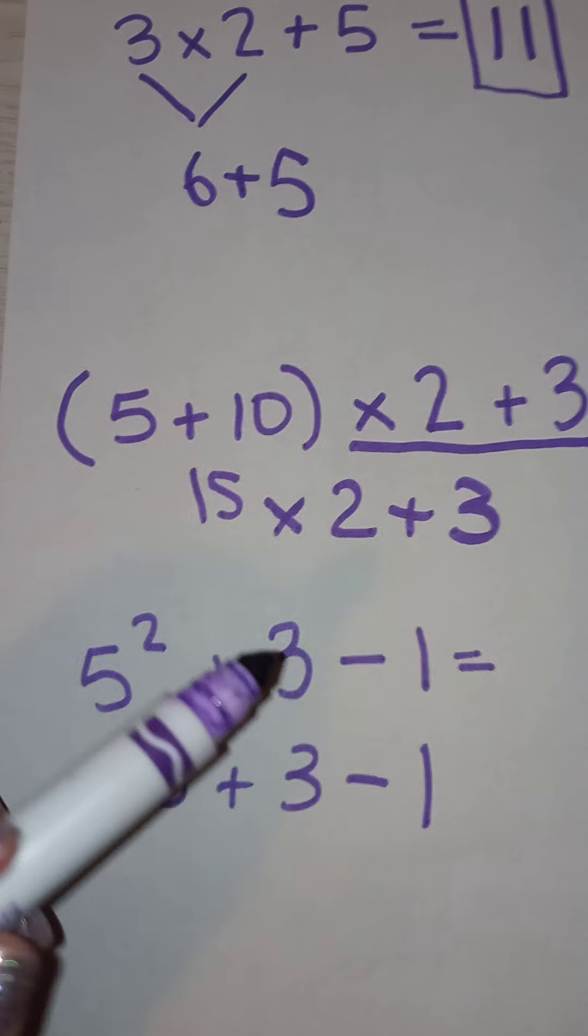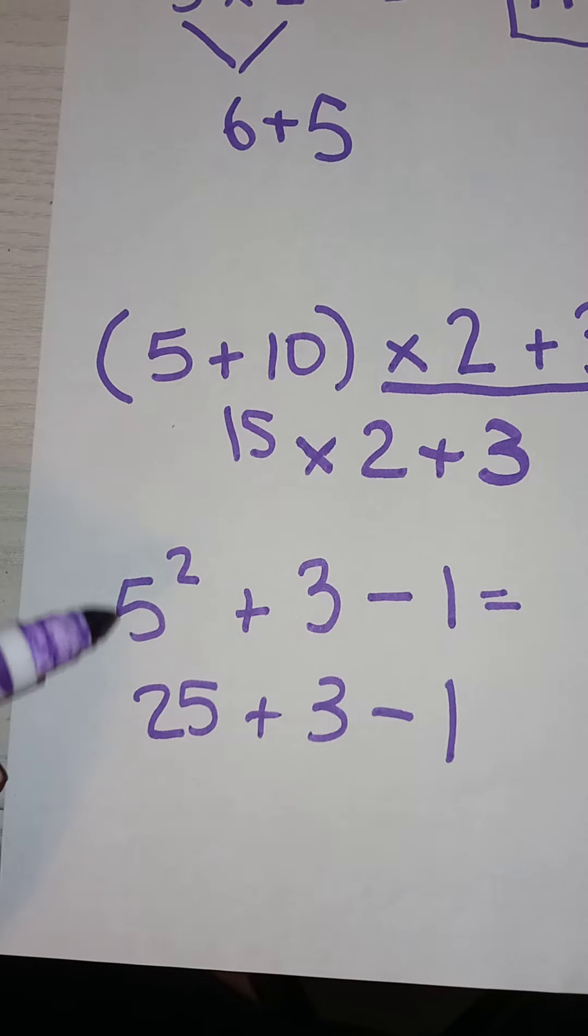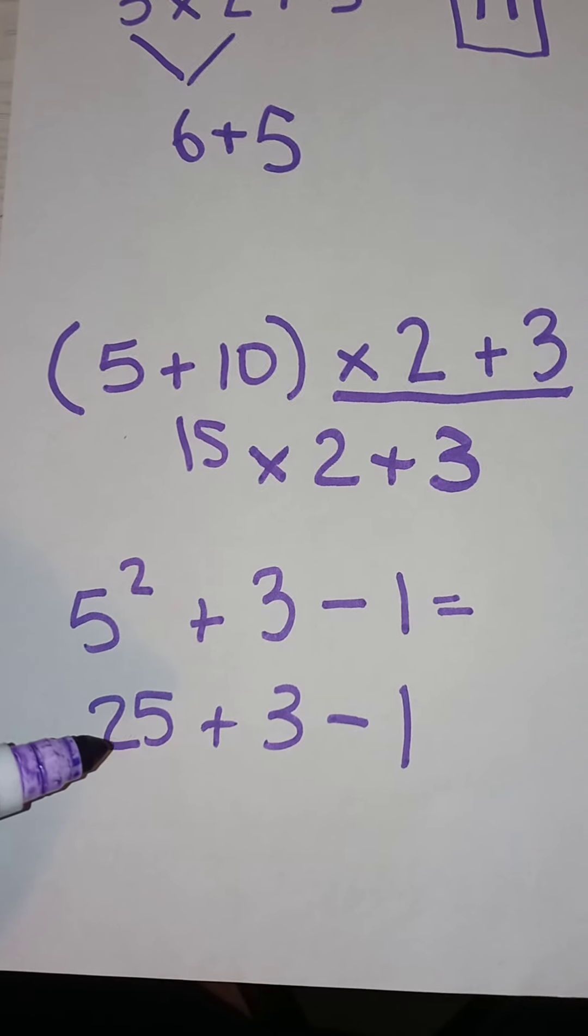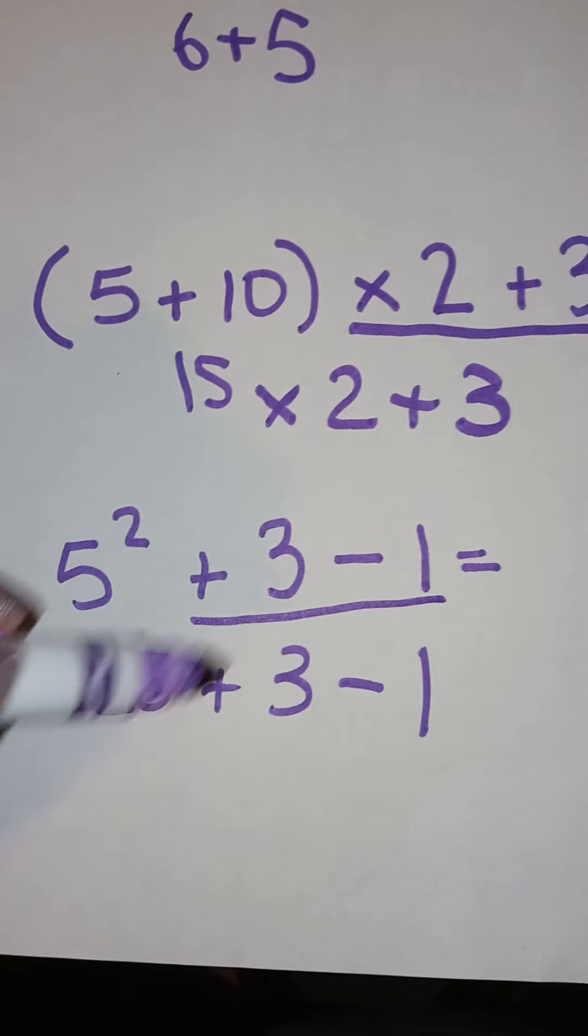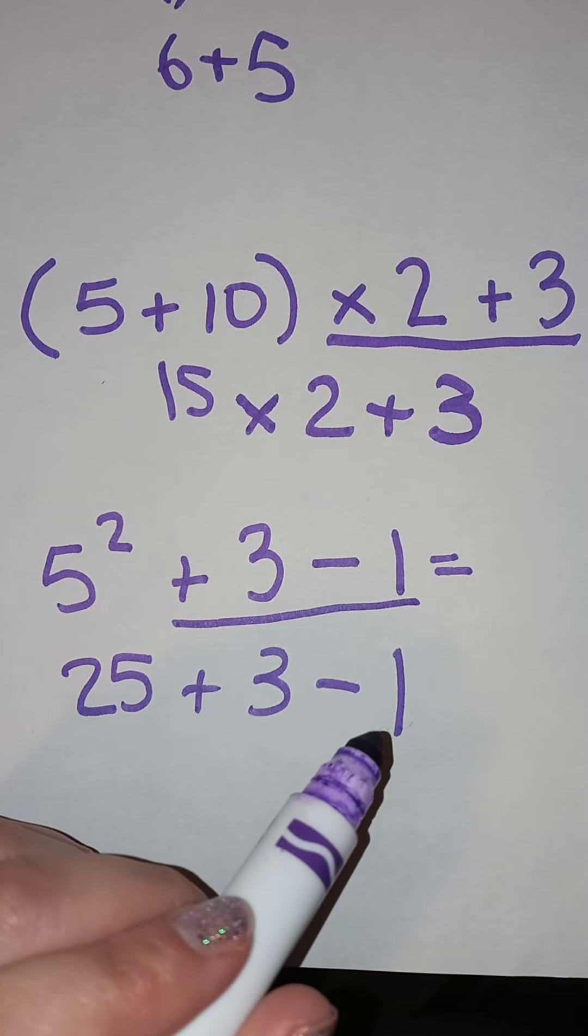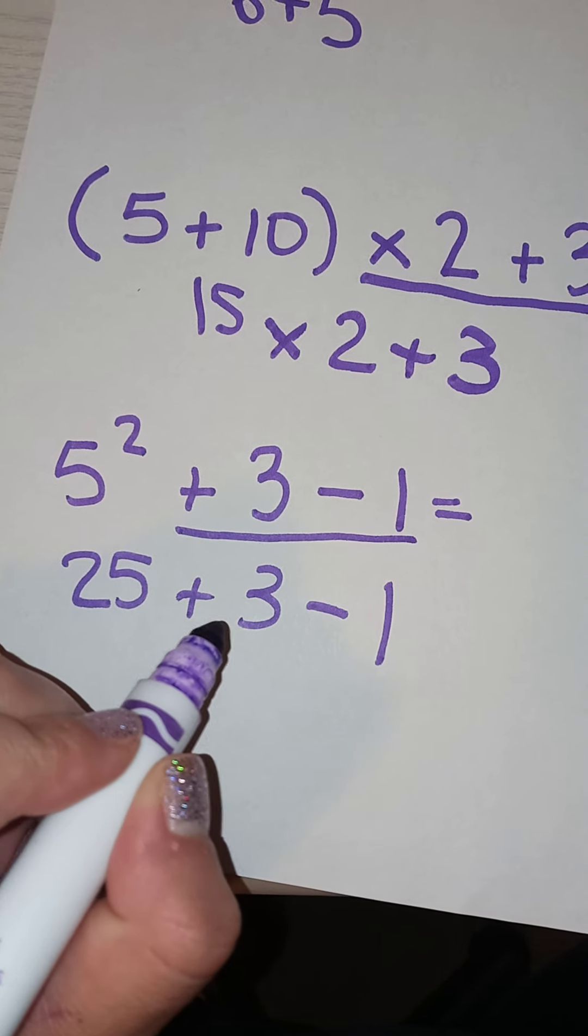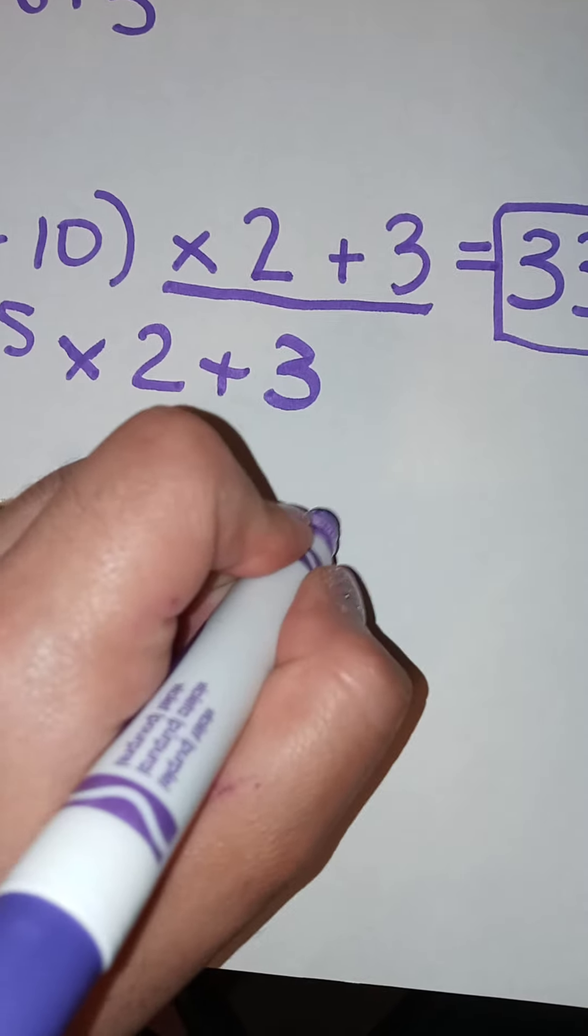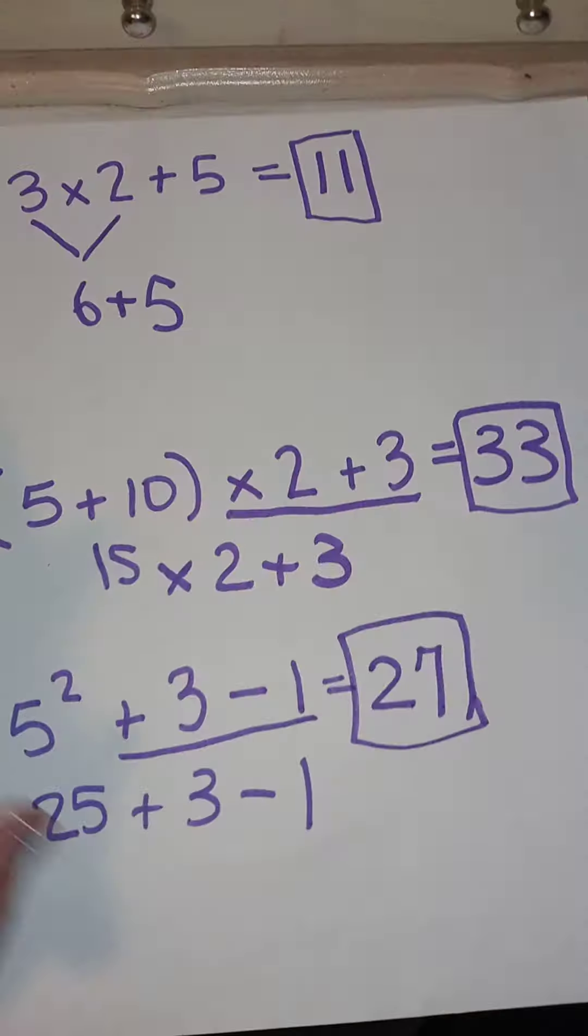You will still get the same answer. And, I went ahead and did the five squared, which is twenty-five. I brought this whole equation down. Plus three minus one. And, we get that twenty-five plus three is twenty-eight. Minus one equals twenty-seven. And, that is the correct answer.